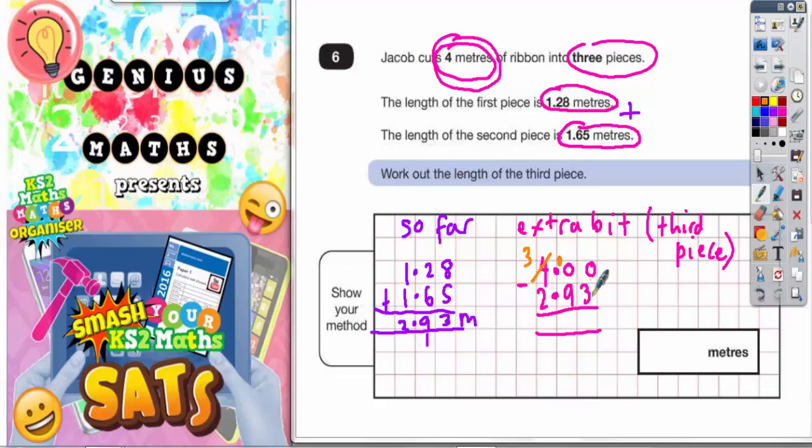But that's still no good because we still can't do 0 take away 3. So now we need to borrow from the 10 which becomes 9. And the 1 we borrowed makes this 0 into a 10 which is what we need because now we can do 10 take away 3.